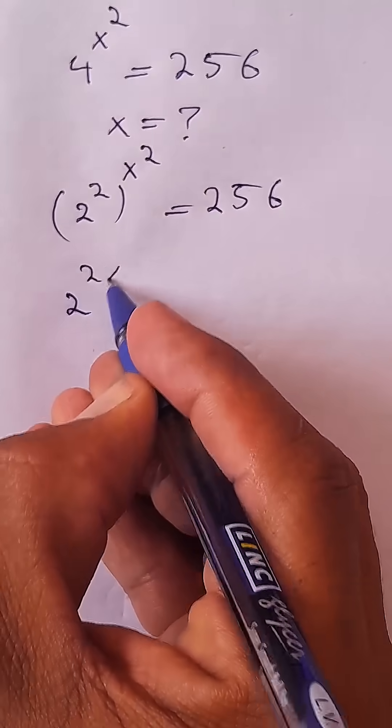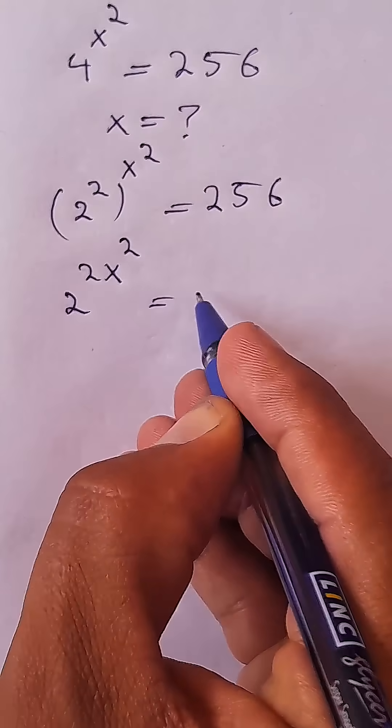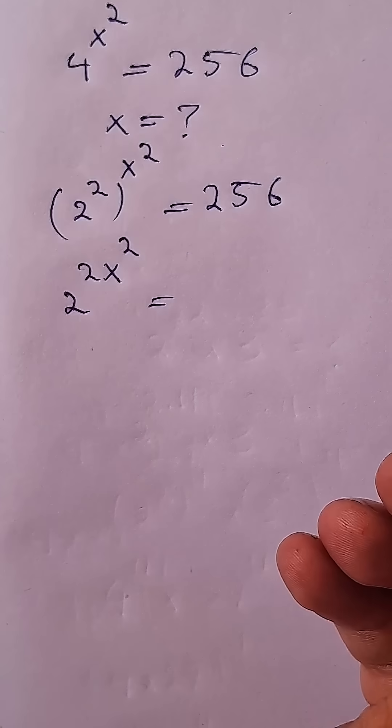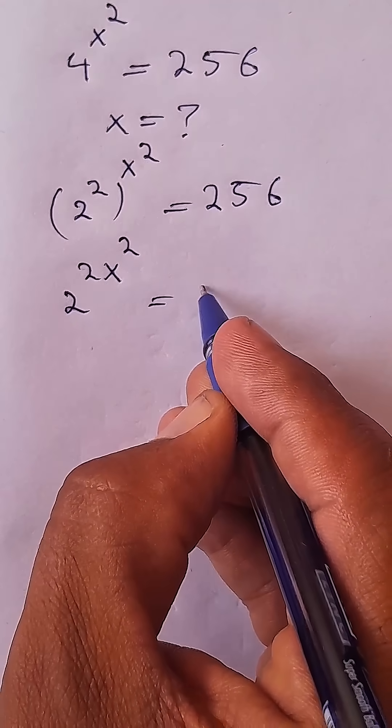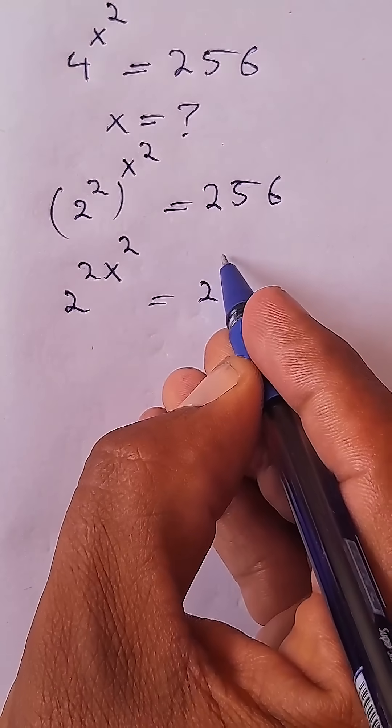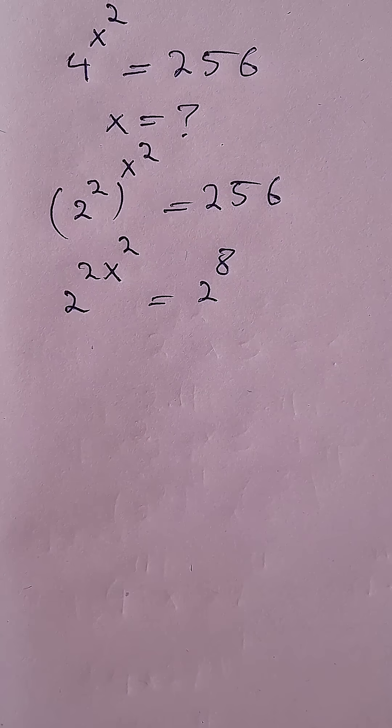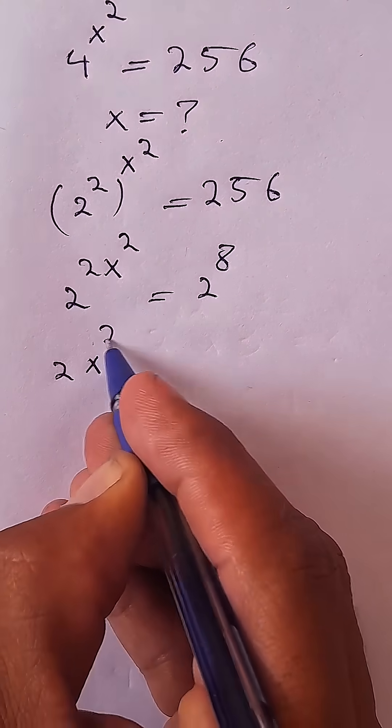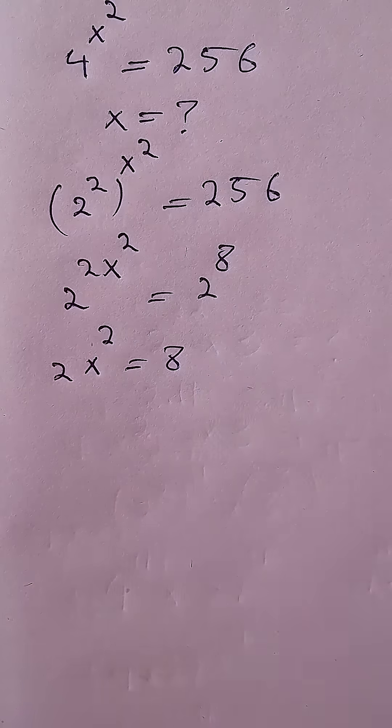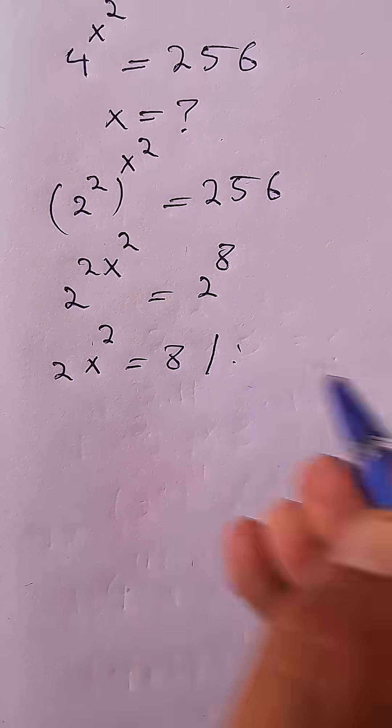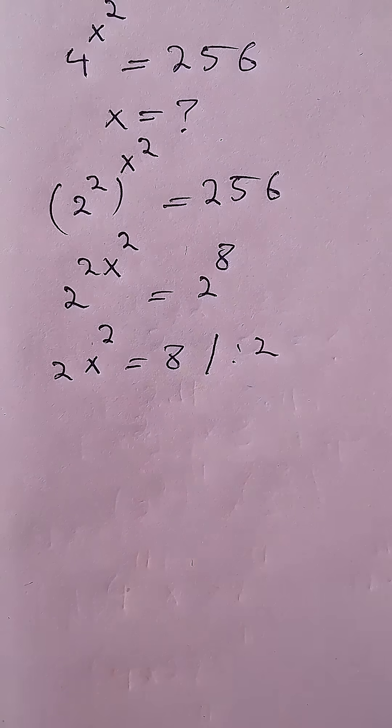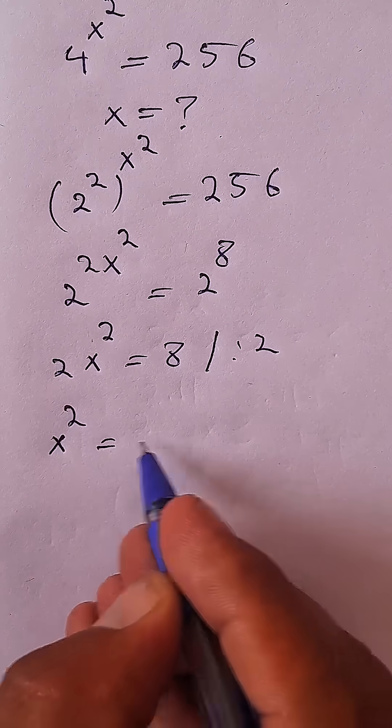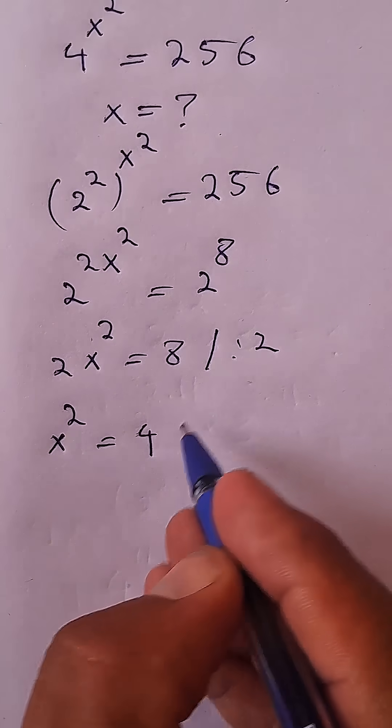Instead of 256, it becomes 2 to the power of 8. Now 2x squared equals to 8. If I divide both sides of the equation by 2, x squared equals to 4.